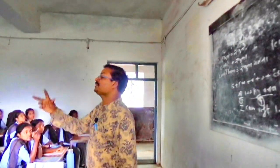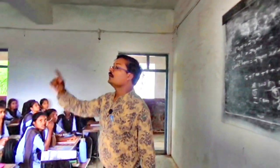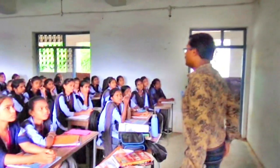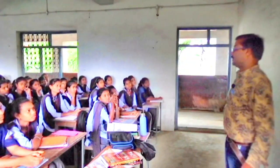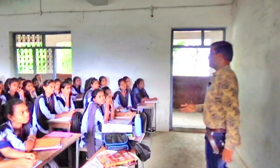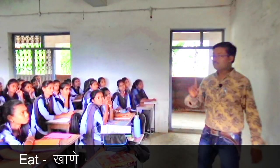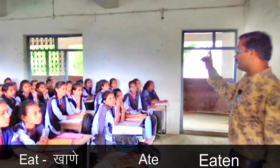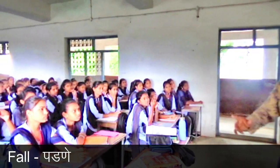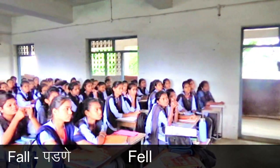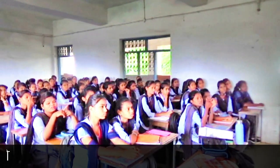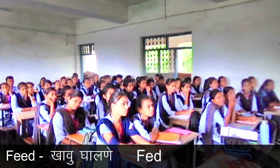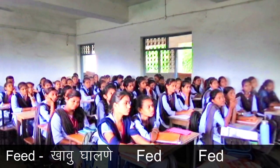So many students commit mistakes in verb — V1, V2, V3. They don't know V1, V2, V3. Just like this: eat means khane (V1), second form ate, third form eaten. Fall means padne, second form fell, third form fallen. Feed means khau ghalne, second form fed, third form fed.